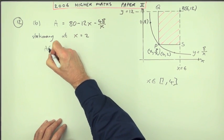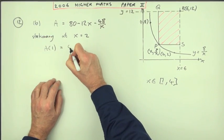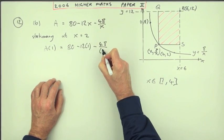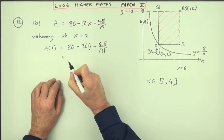What's the area when x is 1? Well, in the formula that'll be 80 minus 12 times 1 minus 48 over 1, and that comes to 20. That's a mark, that's mark 8.